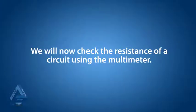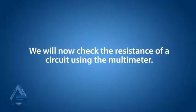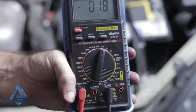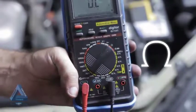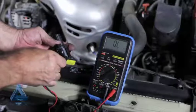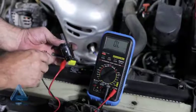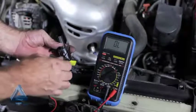We will now check the resistance of a circuit using the multimeter. Turn the dial of the multimeter to ohms, which can be identified by the omega symbol. Placing a probe on either side of a component or circuit will allow us to check the resistance between those two points.